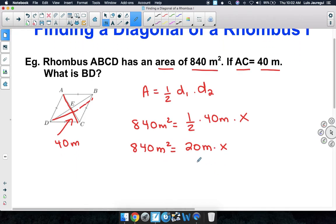Our goal is to get the X by itself. So let's go ahead and divide both sides of the equation by 20 meters.